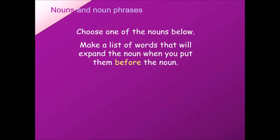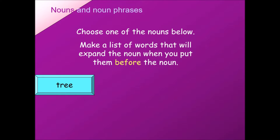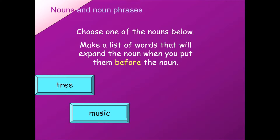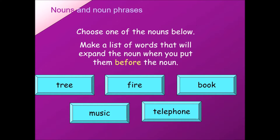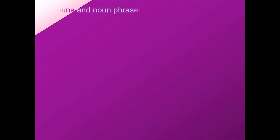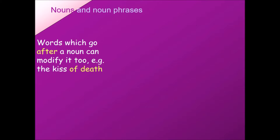So let's look at some example words: tree, music, fire, telephone, and book. You can use words before the noun to make them more enriched, providing more information — like 'the loud music' or 'blazing fire.' You can add words before the noun to modify its meaning. Words can also go after a noun to modify its meaning, such as 'the kiss of death.'